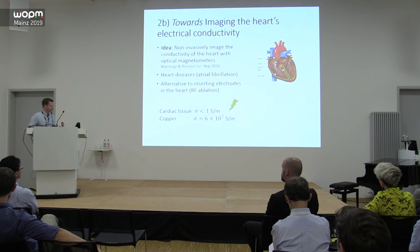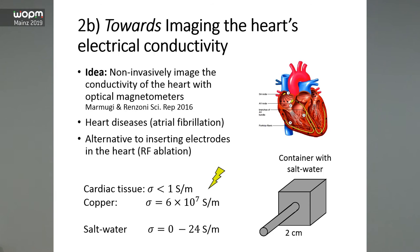In this study we didn't use hearts — we started with something easier and more stable. We used small containers of salt water, which has similar conductivities to heart tissue, ranging from 0 to 24 Siemens per meter (the higher value being fully salt-saturated water). This is easier to study than a living beating heart, so we started there.